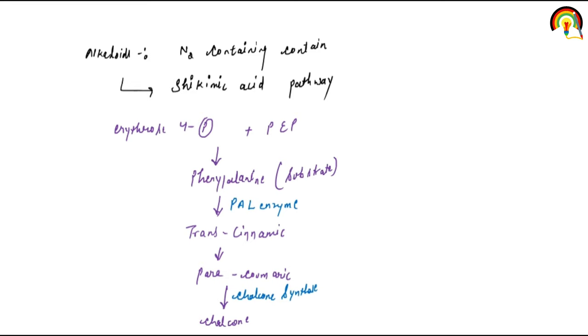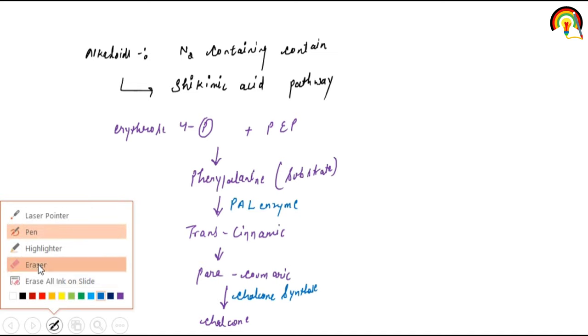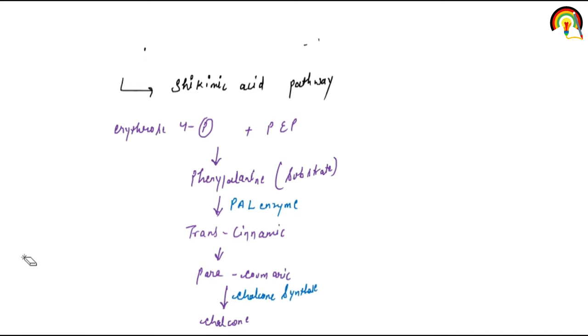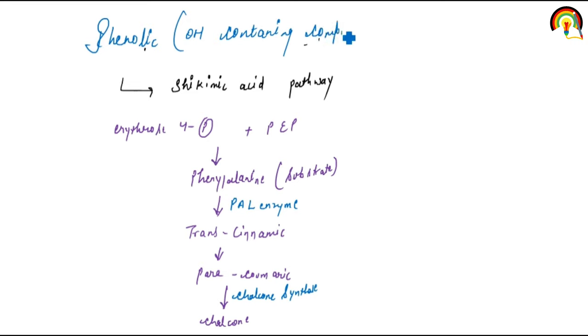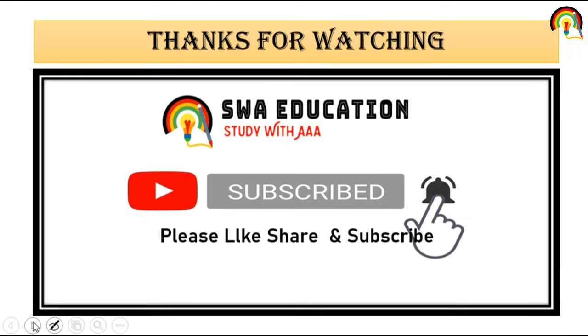The shikimic acid pathway is mainly used for phenolic compounds — OH-containing compounds — and also for alkaloids. Phenolics follow both the shikimic acid pathway and the mevalonic acid pathway, while alkaloids only follow the shikimic acid pathway. These are secondary metabolites that provide a defense mechanism against herbivory and pathogens that attack the plant.